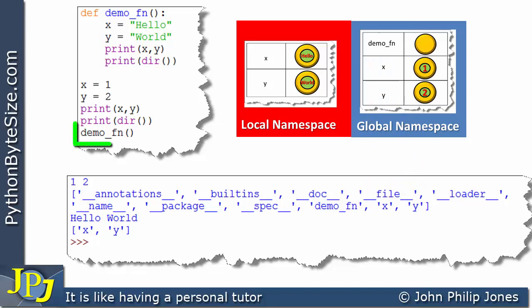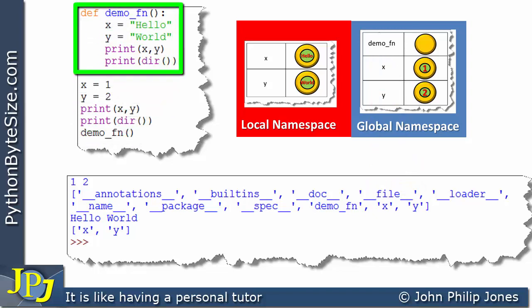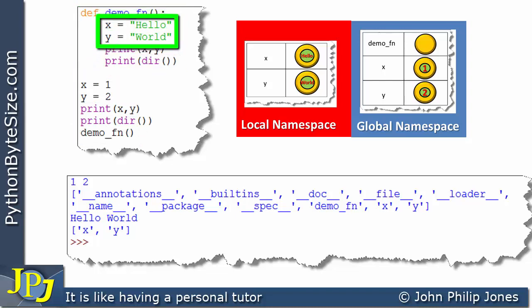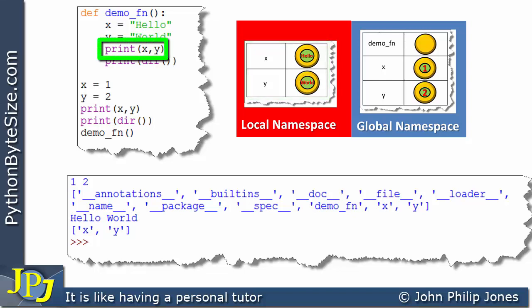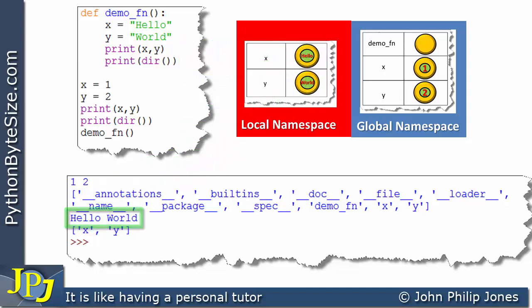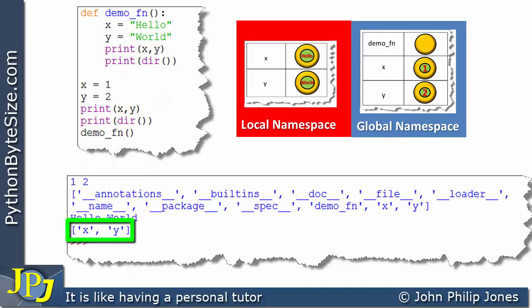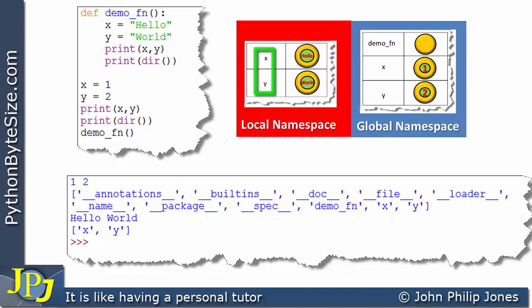The next line invokes the function. The first two lines inside the function set up the local namespace, and when we reach the print statement it prints x and y from the local namespace — that is, 'hello' and 'world' — as seen in the output. The following line prints the local namespace itself, showing x and y as the names within it.